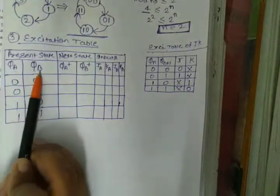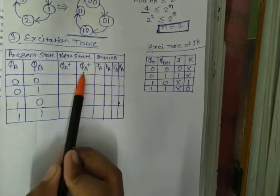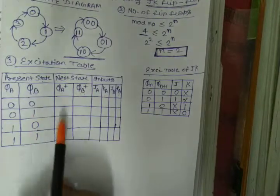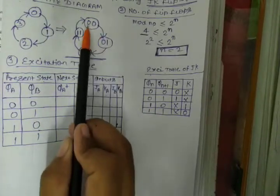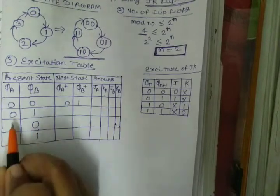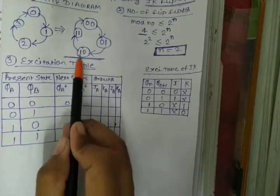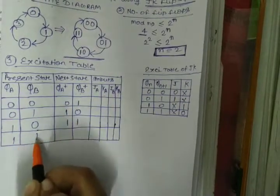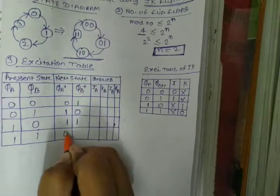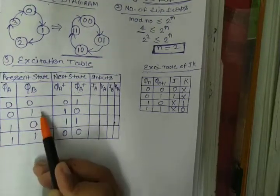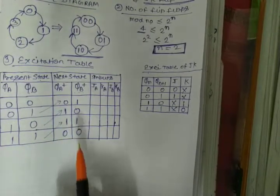Here we have the present state. Now we will fill the next state QA+ and QB+. From the state diagram: after 00 the state is 01, so fill 01. After 01 the next state is 10, so fill 10. After 10 the next state is 11. And after 11 the next state is 00. You can also do this as a shortcut by shifting values.